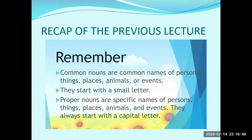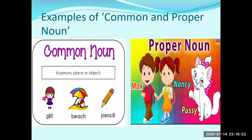Now let us see a few examples of common noun and proper noun. In the first picture, girl, beach, and pencil are the names given to a person, place, and things in common, so they are called common nouns. In the second picture, Mac, Nancy, and Pussy are specific names given to a boy, a girl, and an animal, and they are written with a capital letter, so they are called proper nouns.